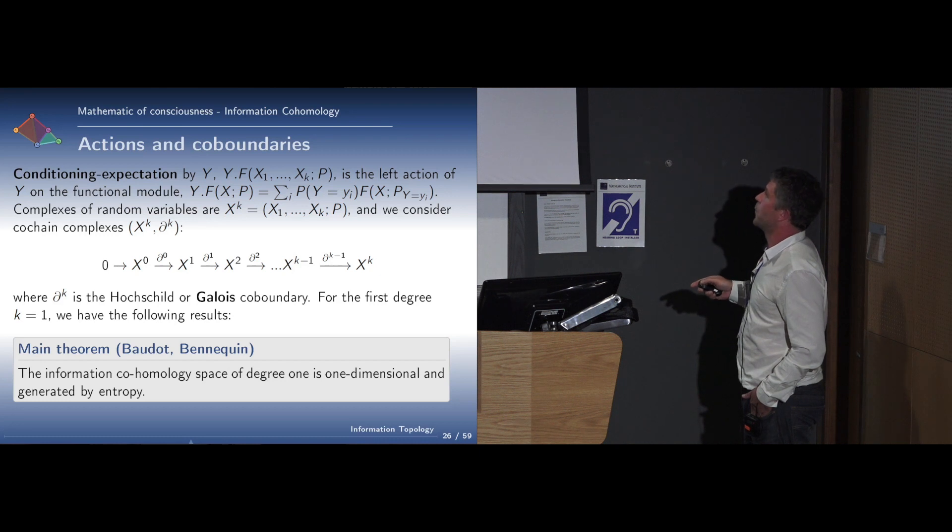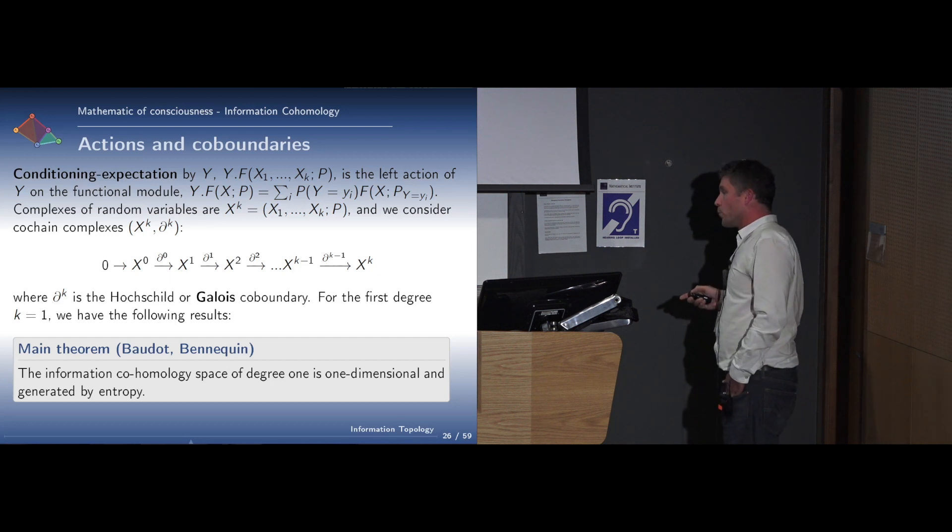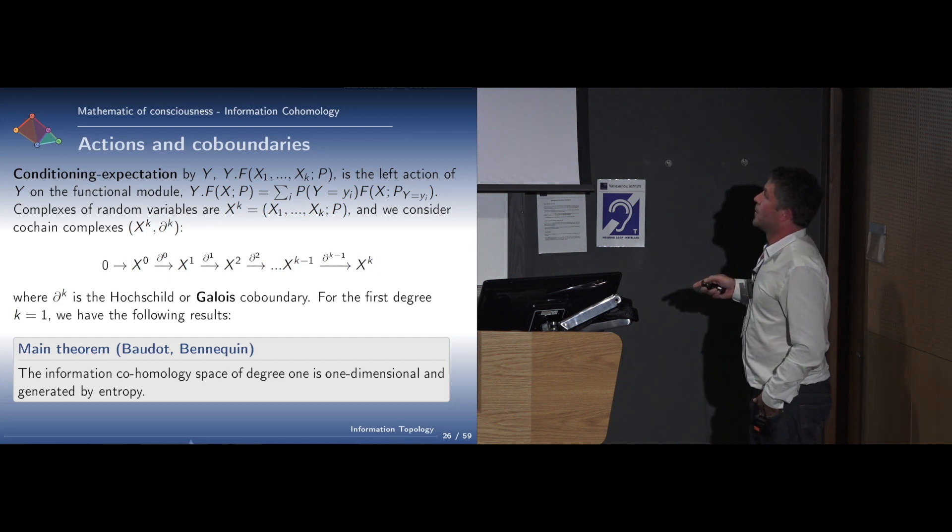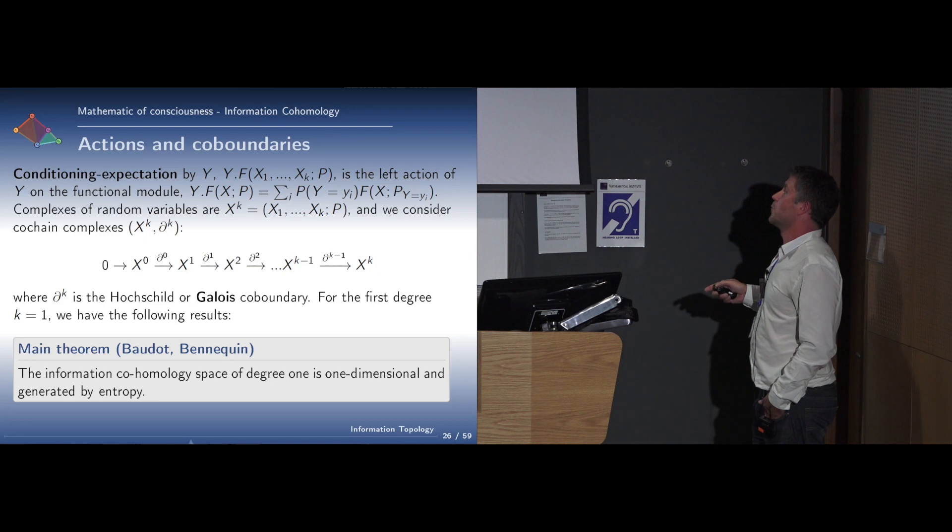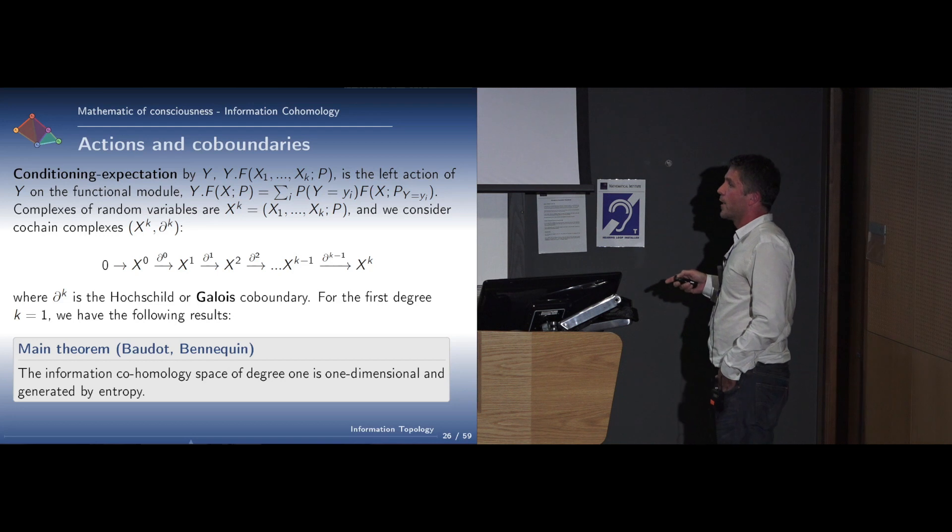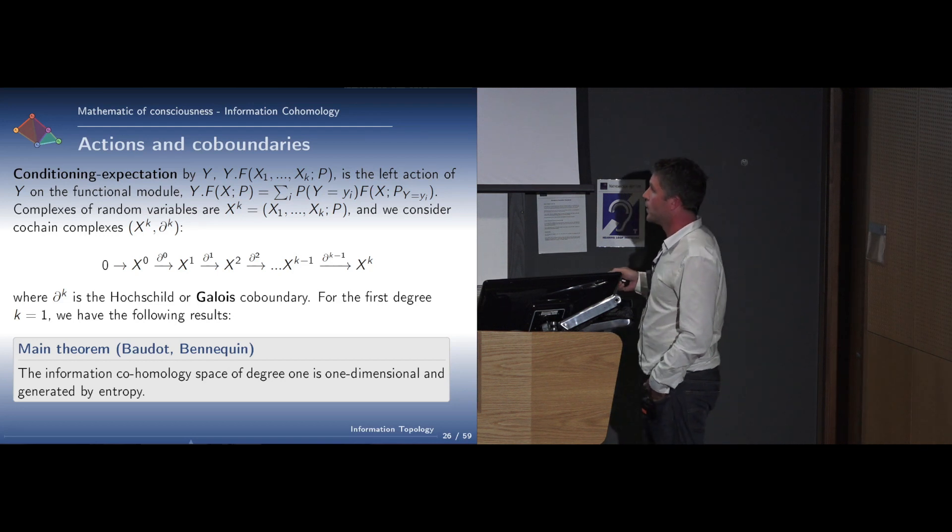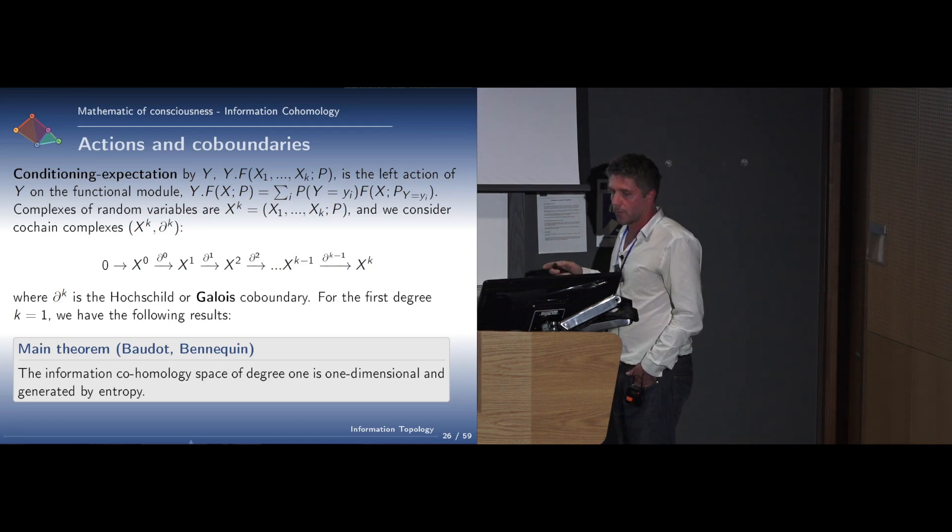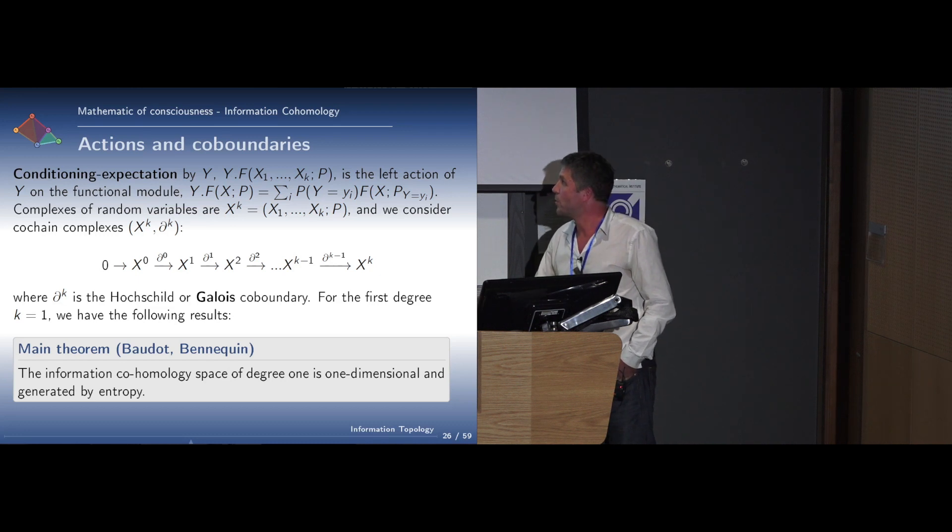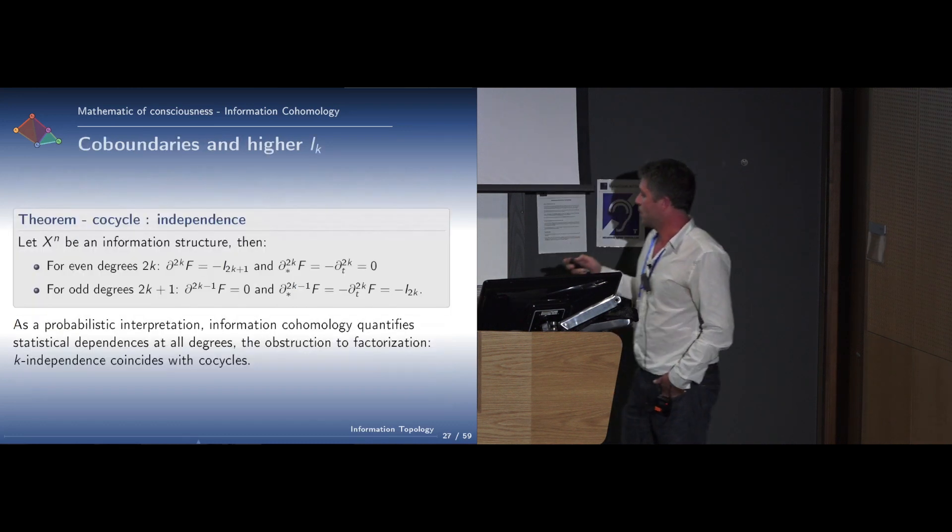When we do this in the first degree, for the first step, we obtain for the cocycle condition exactly the chain rule of information. From this chain rule of information, we get the functional equation of entropy, which allows to derive uniquely entropy as the first cohomological class of the cohomology. We have a characterization, unique characterization of entropy in this context.